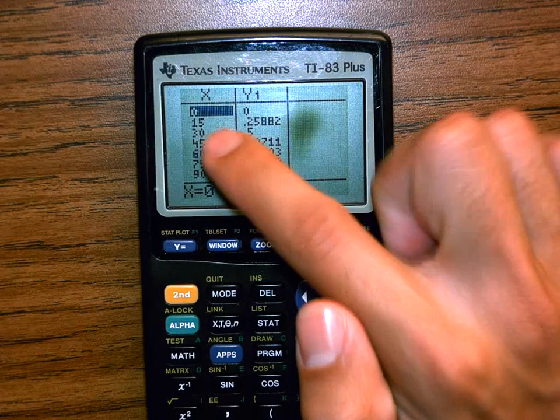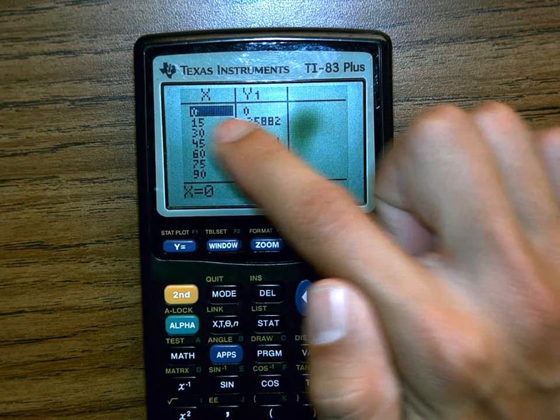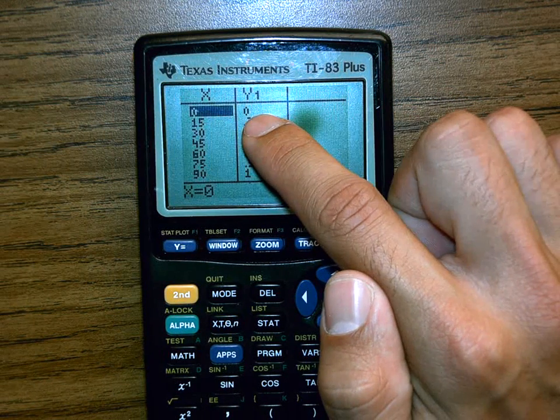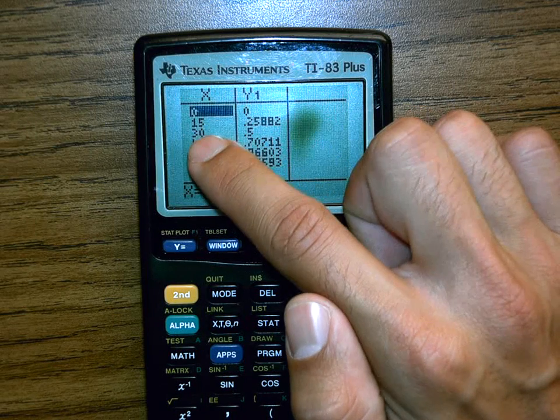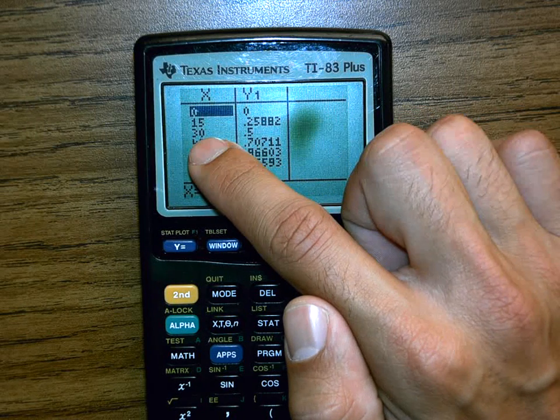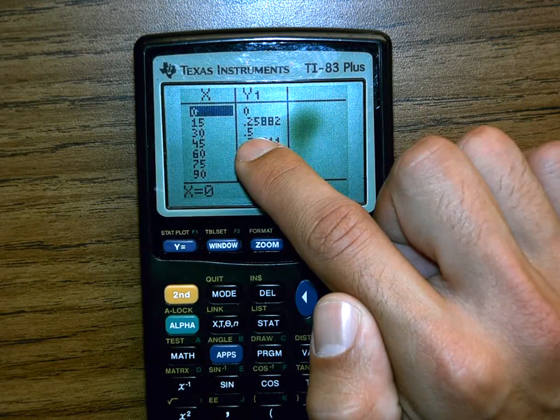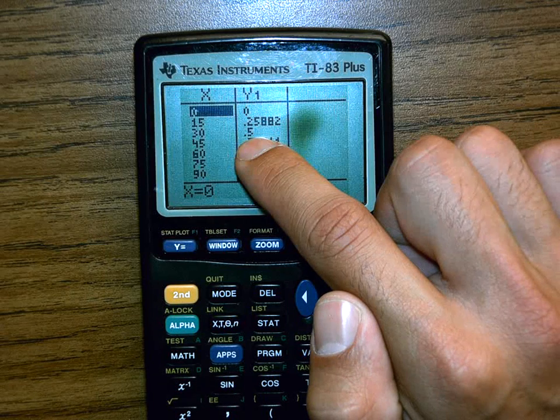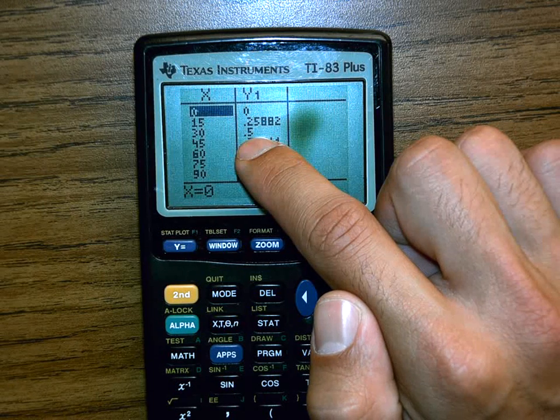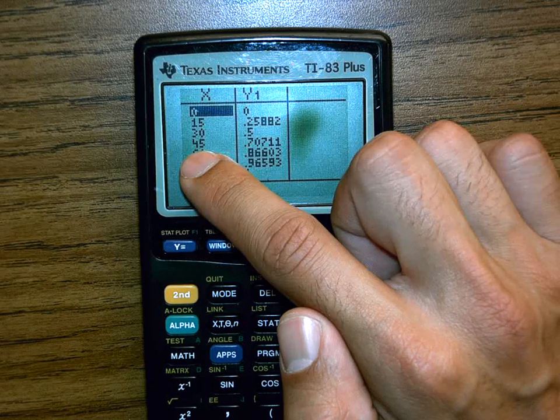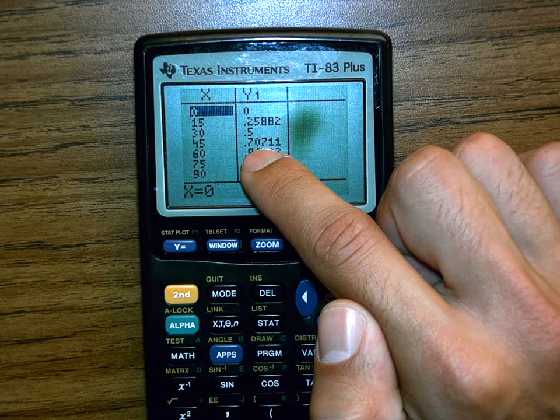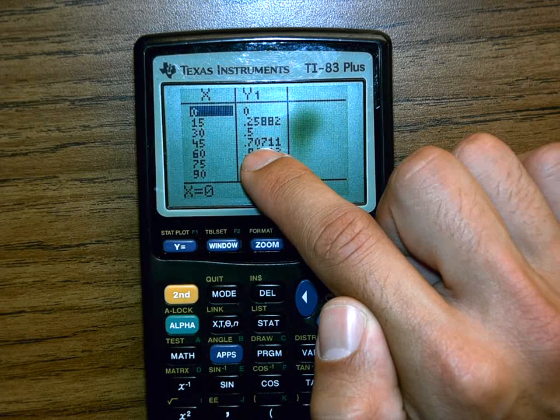This means when X is zero, the sine of X is zero. When X is 30, the sine is 0.5. Remember, I want to go to tenths place. When X is 45, it's 0.7. That's root 2 over 2, by the way.